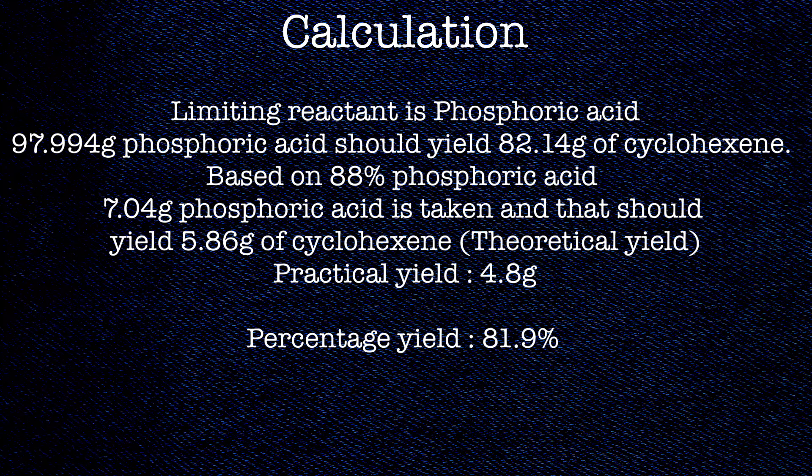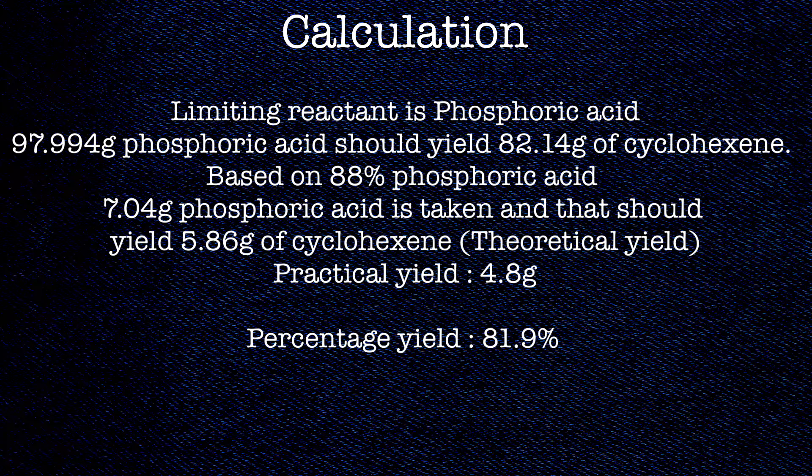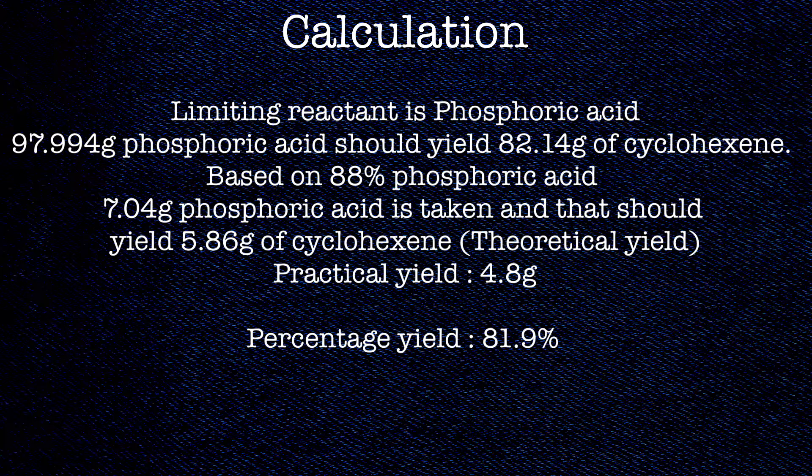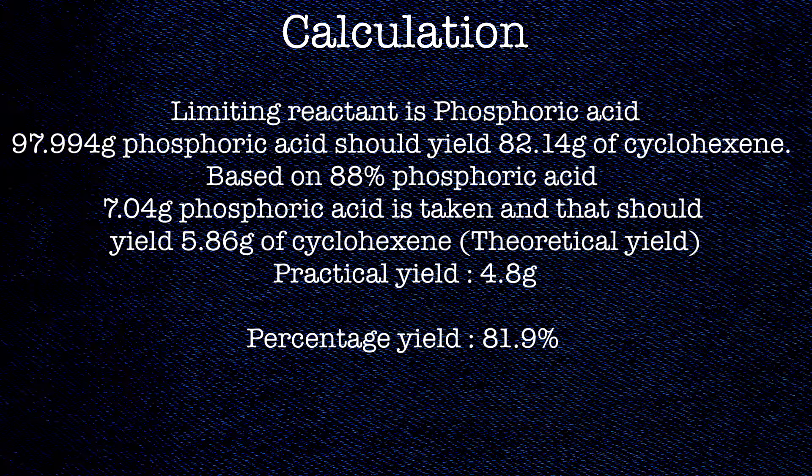Now moving on to the calculation part. Phosphoric acid is the limiting reactant in this synthesis. 97.994 grams of phosphoric acid should give 82.14 grams of cyclohexene. So after calculating the density based on 88% phosphoric acid, we have taken 7.04 grams of phosphoric acid and that should yield 5.86 grams of cyclohexene. The practical yield is 4.8 grams, so the percentage yield is 4.8 divided by 5.86 into 100 and that is 81.9 percent.